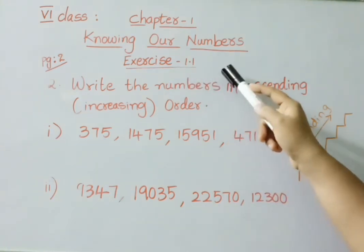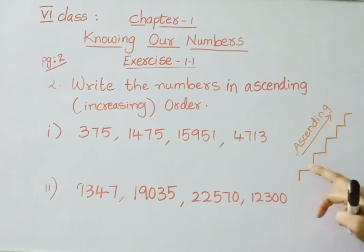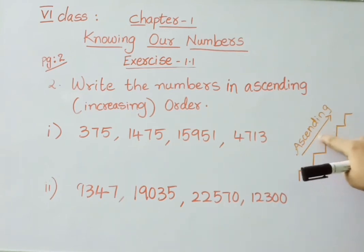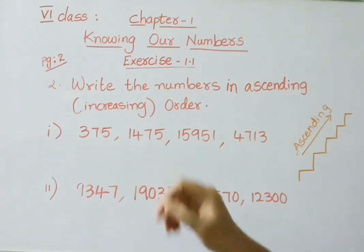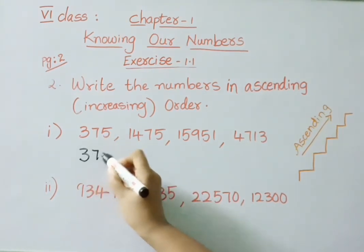See now Exercise 1.1, second sum: write the numbers in ascending or increasing order. Ascending order means we arrange the numbers from smallest to biggest. When we are climbing up the stairs from lower to higher, that can be remembered as ascending order. See the first example: 375, 1,475, 15,951, and 4,713. We arrange from small to big — the 3-digit number is the smallest, so write 375 first.